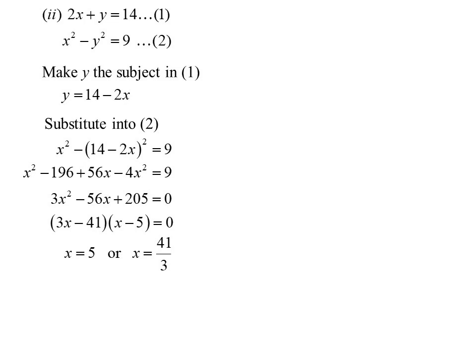We get 3x minus 41, x minus 5. We have two possibilities. Well, let's find the y for each of those possibilities, and we get y equals 4, y equals negative 40 on 3. This one, of course, is very important I write a final answer down, because which one goes with which? Again, it's not up to the reader and my solution to work that out. I should spell it out for them.